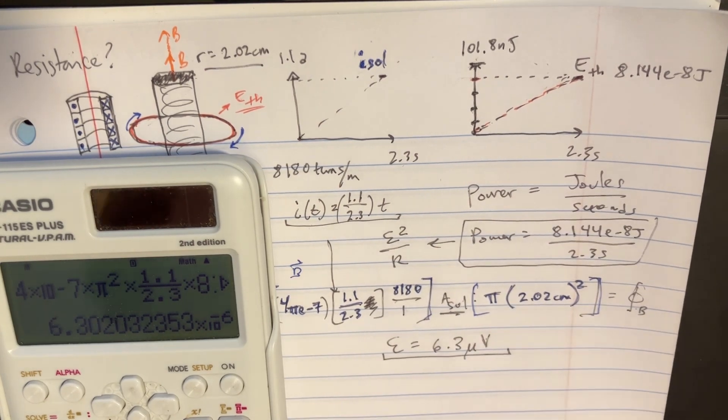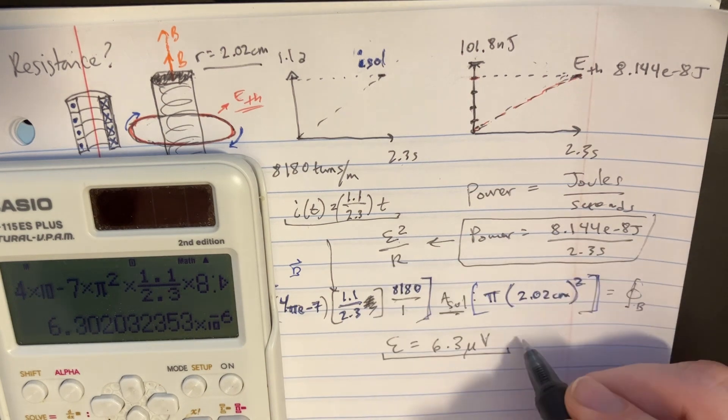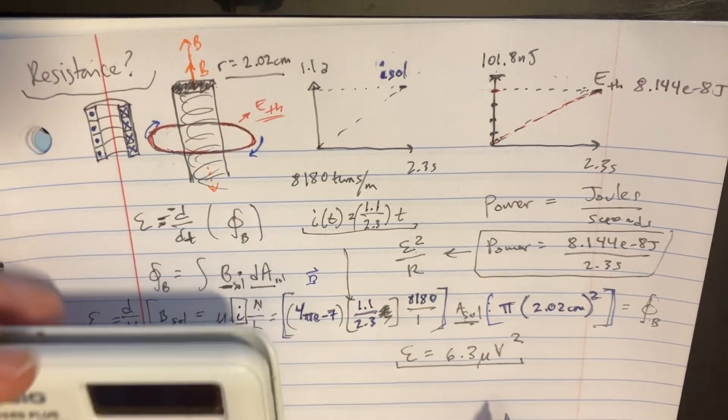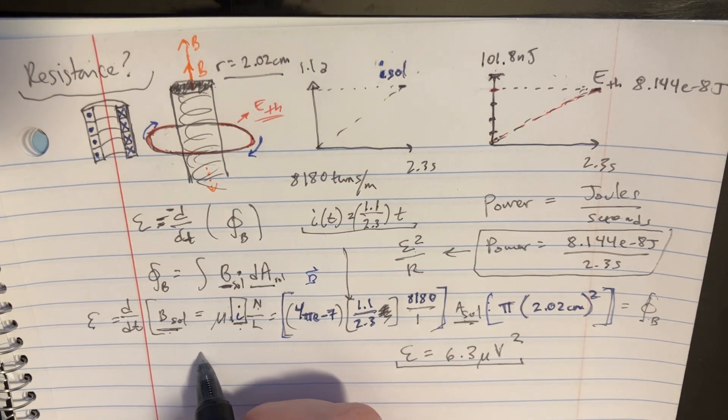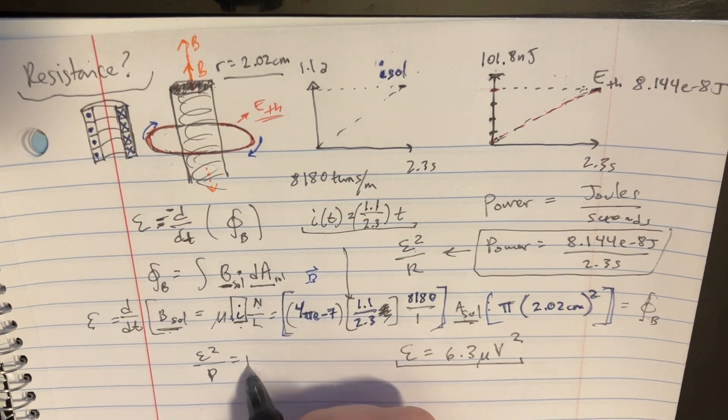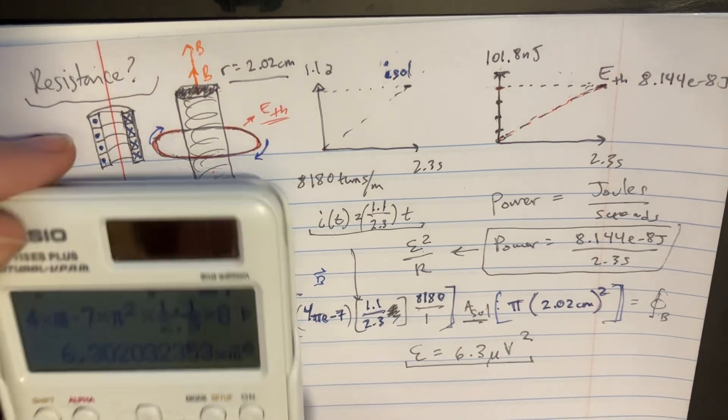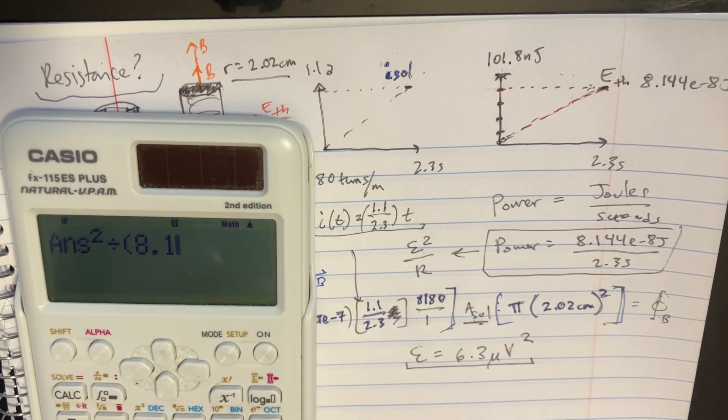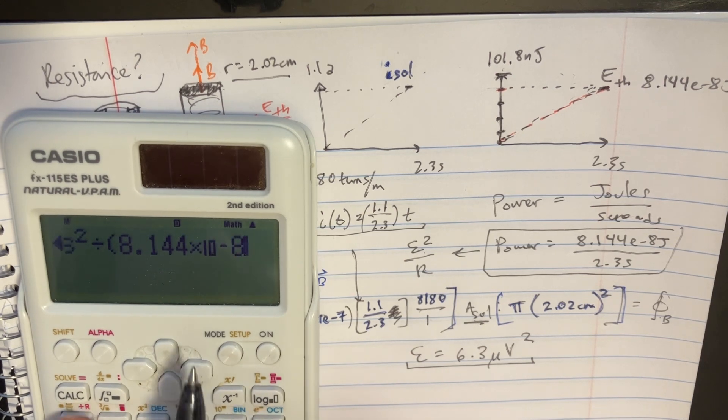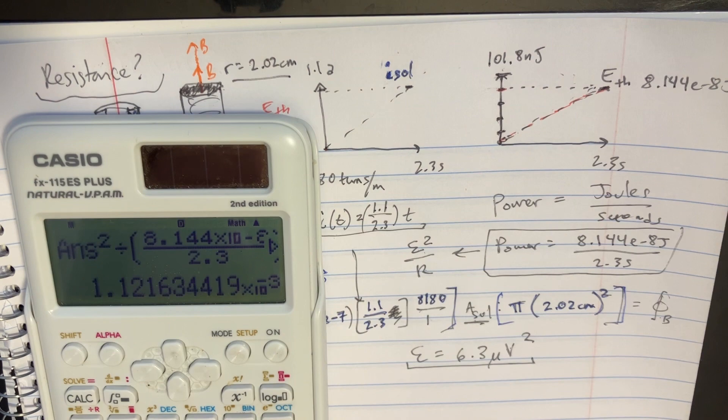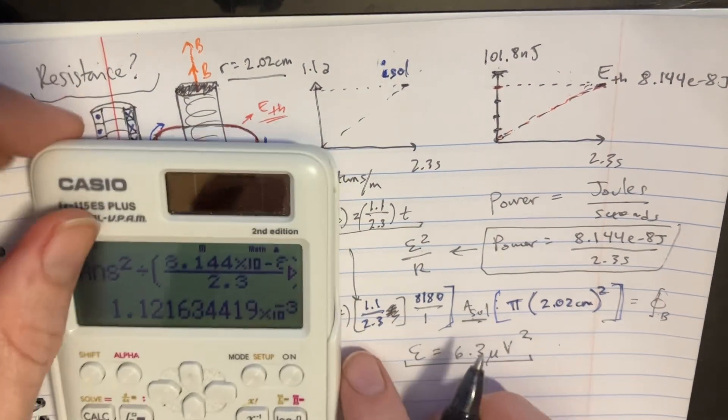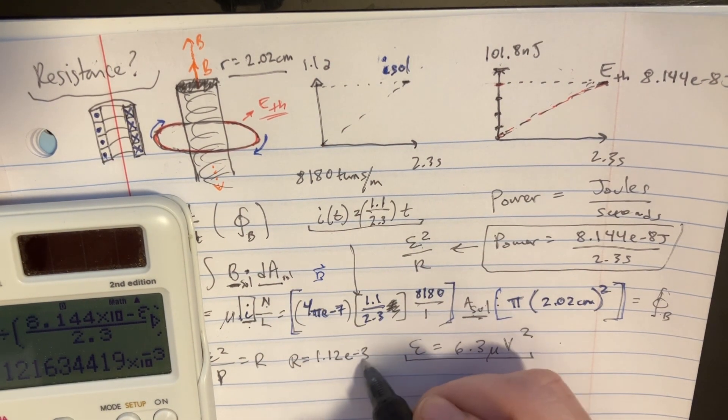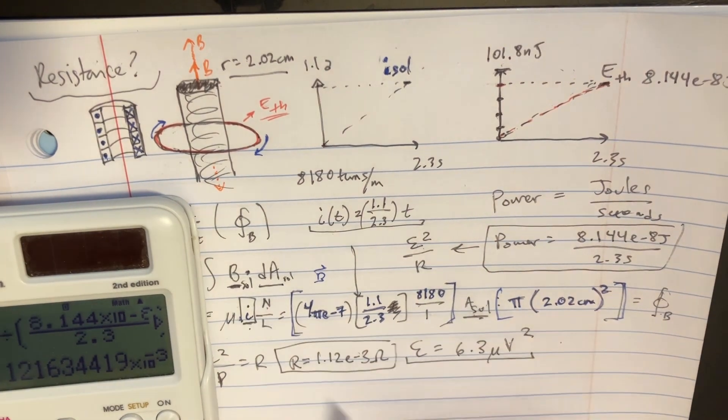And then we're going to go ahead and plug that into this equation by squaring this. And we're actually looking for the resistance here, so we could rearrange this equation because we would get E squared over P equals the R. So if we square this and then we divide this by the power that we found here - 8.1 e negative 8 divided by 2.3 - if we just go ahead and do that, then we should be able to get the resistance. And so we found that resistance is equal to 1.12 e negative 3, I guess this would be ohms. All right, not too bad.